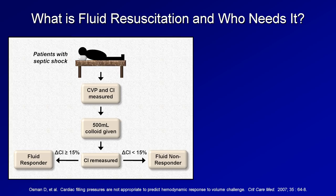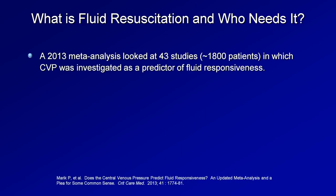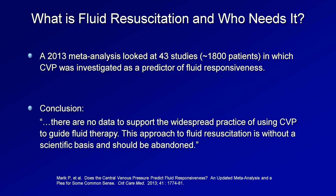The initial CVPs were then compared between the two groups. The investigators found that the CVPs in the responders and non-responders were statistically identical. Or put another way, the CVP had no predictive value in determining which patients would have improved cardiac index after administration of a fluid bolus. This is just one of the 43 studies, including about 1,800 patients, which were included in a 2013 meta-analysis in which CVP was investigated as a predictor of fluid responsiveness.